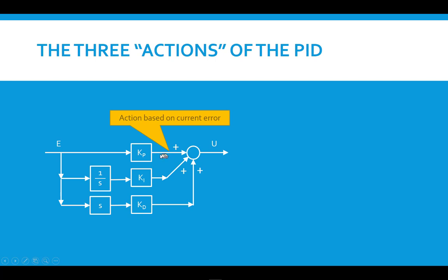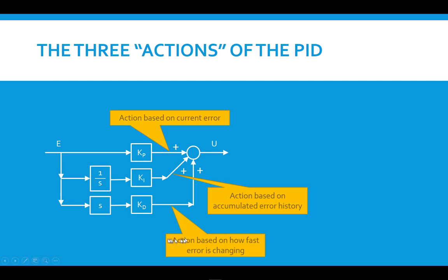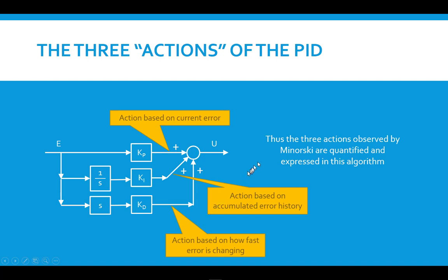To give a more intuitive explanation: the proportional action — the error multiplied by the proportional gain — is based upon the current error. The integral action — integrating the area under the error curve and multiplying by a constant — is an action based upon the accumulated error history, integrated up to the current point in time. The derivative action — taking the slope of the error and multiplying by a constant — is based upon how fast the error is changing at the present point in time. So all three actions observed by Minorski were quantified and expressed in this algorithm.